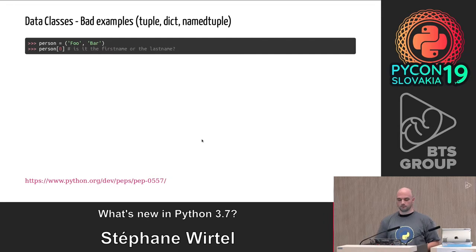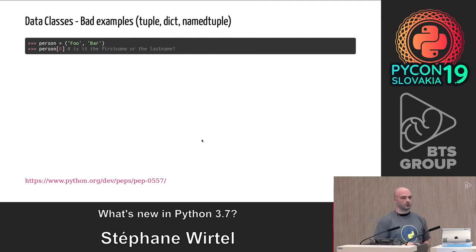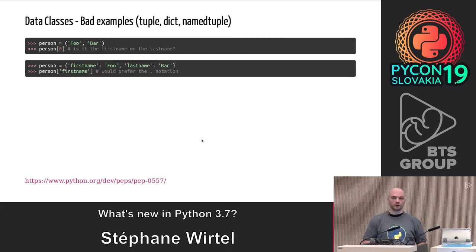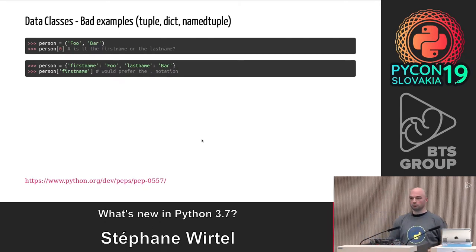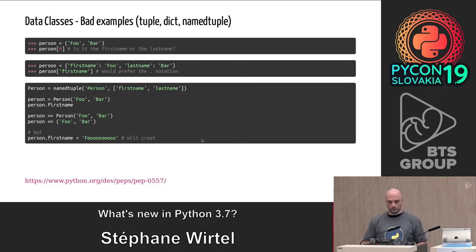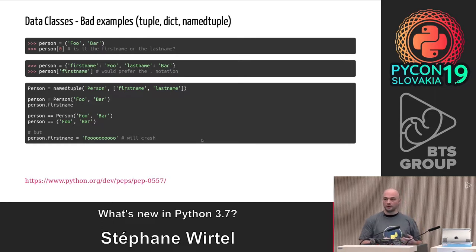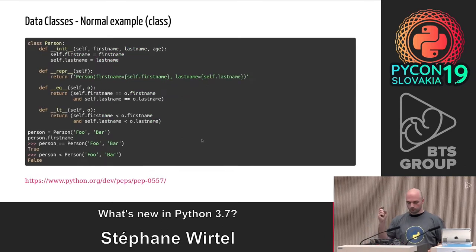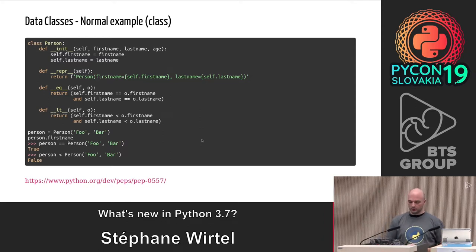For example, with a tuple I would like to represent a person. I can have access within it but I don't know if I'm going to use the first name or the last name. There is a solution: I could use the dictionary to represent a structure. But I have another problem — I would like to have dot notation. We cannot do that with a dictionary. Of course we can use NamedTuple: we define a new structure, instantiate it, access the attribute, and execute the equality operator. But NamedTuple is just in read-only mode.